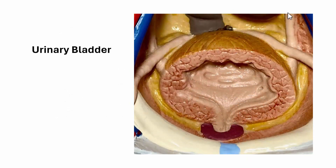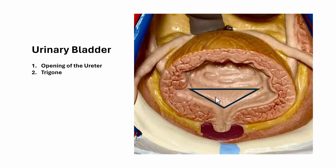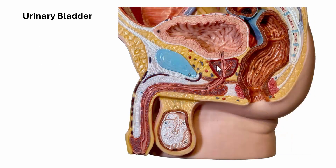Now let's take a look at the bladder. The ureters come down and enter from behind the bladder, opening into the bladder here — these are the openings of the ureter. You might notice this triangular area, which is the trigone. In this particular model, the ureter then goes through what represents a prostate gland, and we also see the vas deferens — the ductus deferens — so this is a male bladder model.